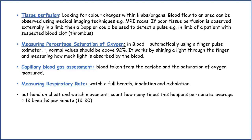Measuring the percentage saturation of oxygen in the blood is done automatically using a finger pulse oximeter. The normal value should be above 92%. It works by shining a light through the finger and measuring how much light is absorbed by the blood.